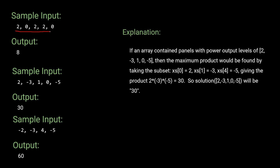For sample input one, the array is [2, 0, 2, 2, 0]. We multiply all the positive numbers: 2 × 2 × 2 = 8, so the output is 8. For sample input two [2, -3, 1, 5], which we checked earlier, the output is 30. Now for sample input three, the elements are [-2, -3, 4, -5].